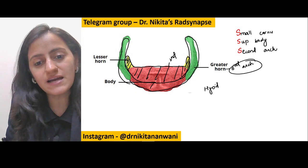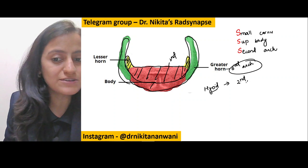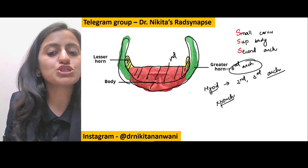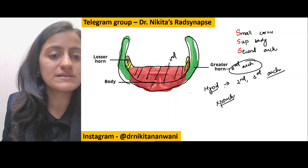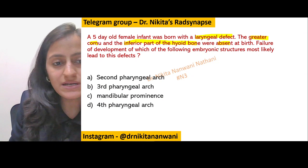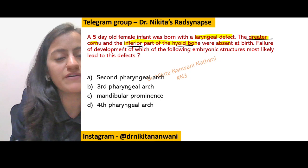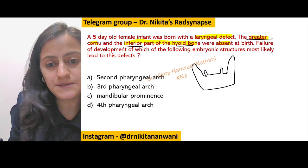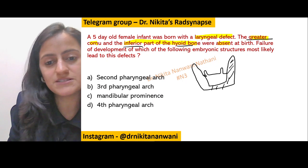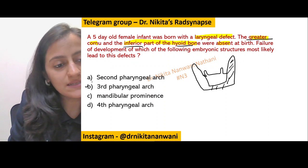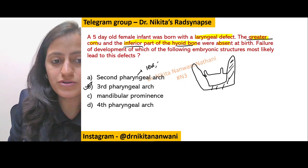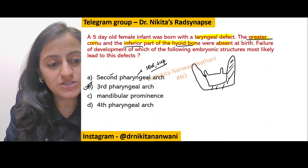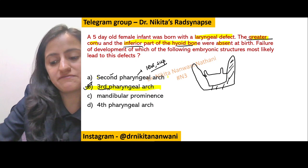So basically, if the question you get is 'hyoid develops from which pharyngeal arches?' — it is the 2nd and the 3rd arch. Remember it is the arch, not the pouch, not the cleft. The skeletal components and muscles come from the arch. Here in the question, the greater cornu and the inferior part of the hyoid bone are absent. From the hyoid diagram, the greater cornu and the inferior half correspond to the 3rd pharyngeal arch. If it was the lesser cornu and the superior part of the body, then it would have been the 2nd pharyngeal arch. So the answer here is the 3rd pharyngeal arch.